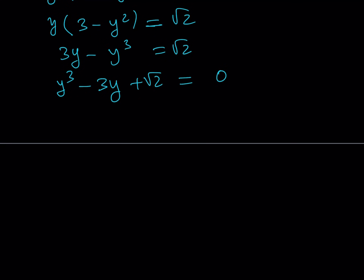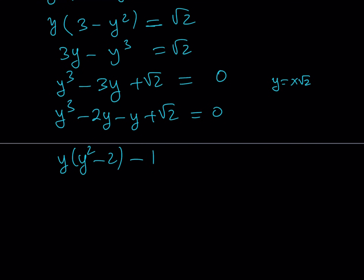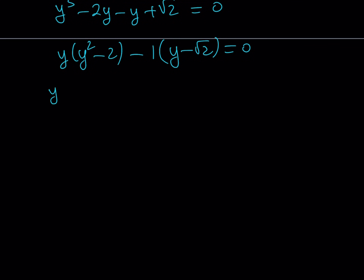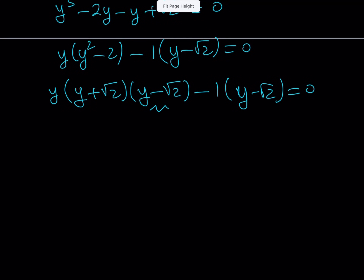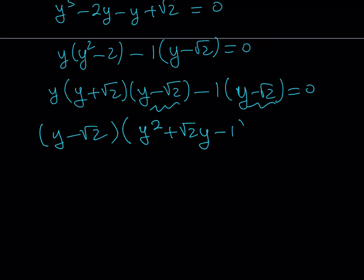You may or may not know that square root of 2 is a solution for this, so we can factor by manipulating a little bit. I'm going to split up the negative 3y into negative 2y minus y, which allows me to factor by grouping. We get a common factor. This is factorable by difference of two squares: y plus root 2 multiplied by y minus root 2, and then minus 1 times y minus root 2. We do have a common factor, y minus root 2. Taking that out also shows that y equals square root of 2 is a solution. The other factor gives us y squared plus square root of 2 times y minus 1 equals 0.